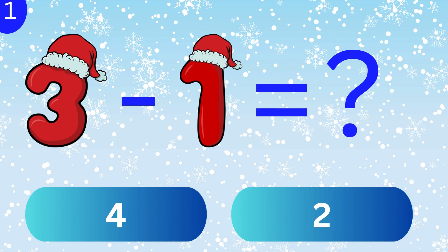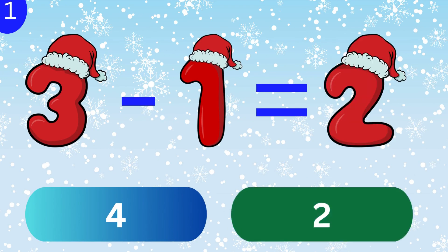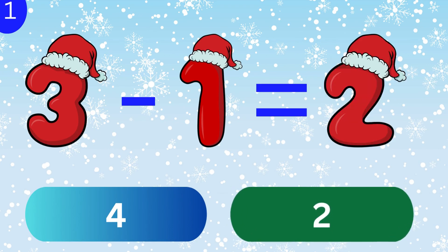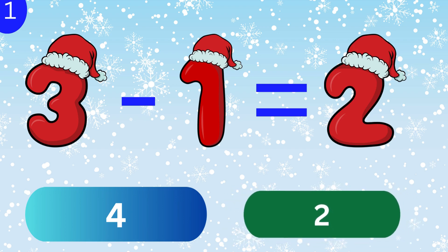What is 3 minus 1? 2. 3 minus 1 equals 2.